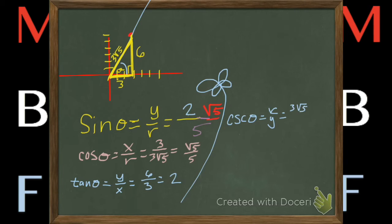Let's go find the reciprocals. The reciprocal of the sine is the cosecant. That's my r over my y, which was three root five over six. And then I reduce.